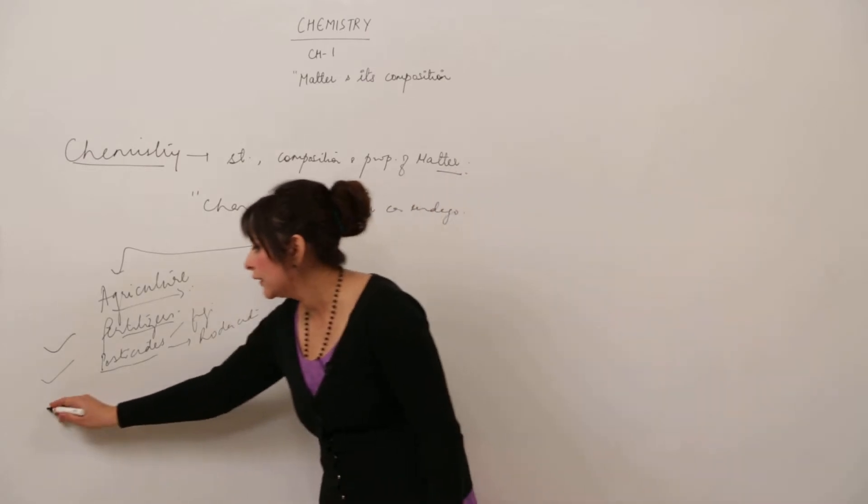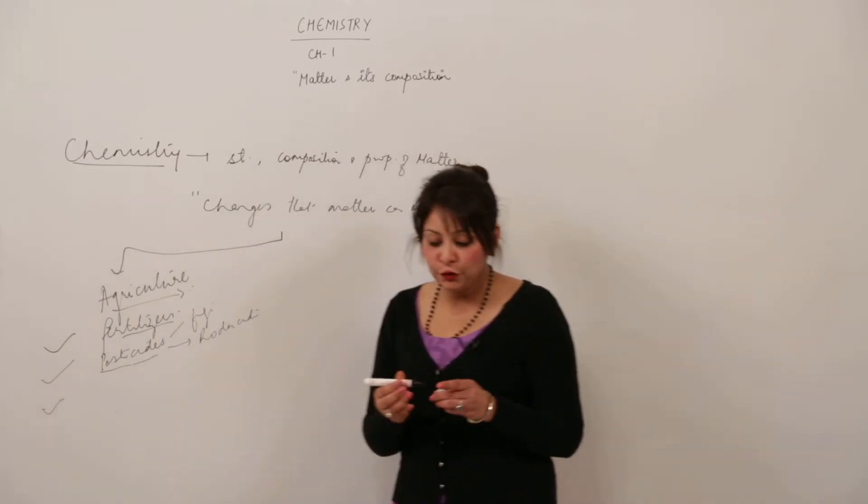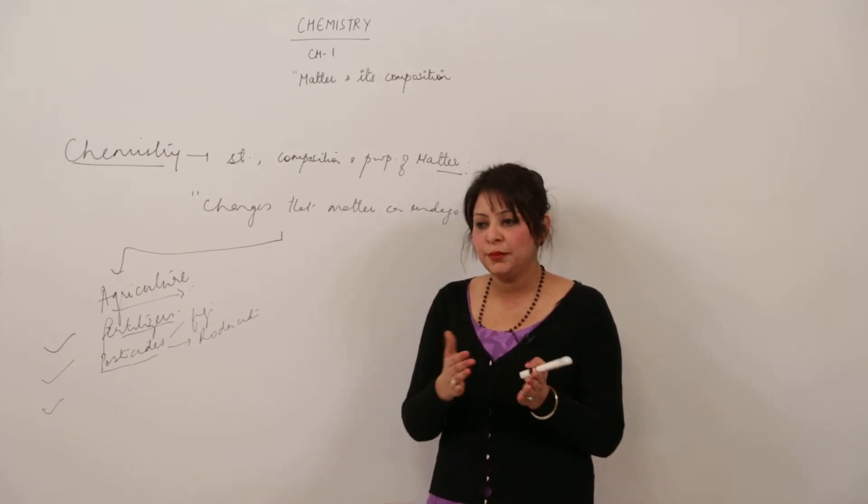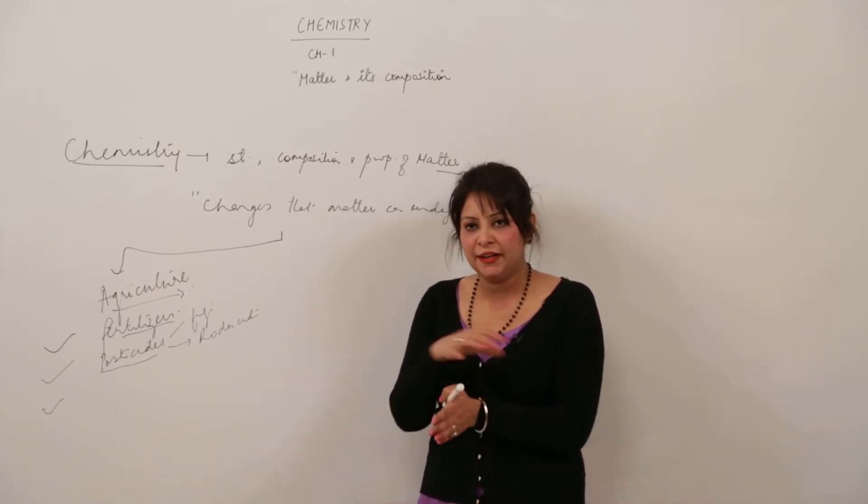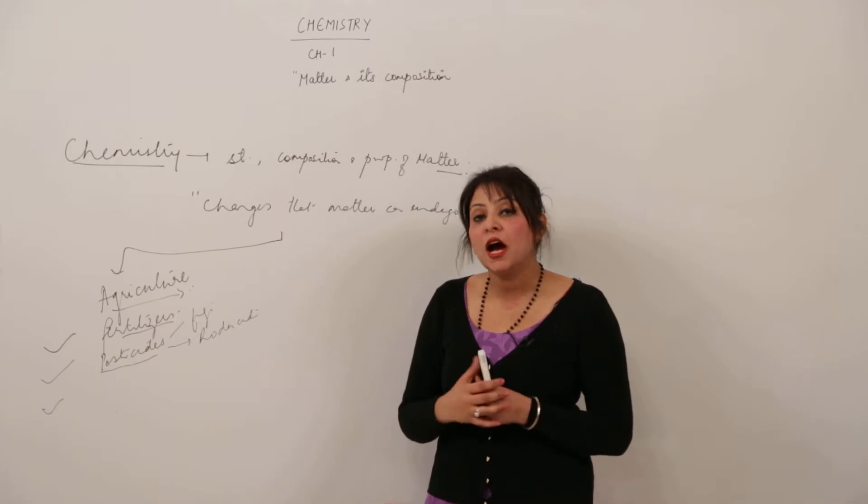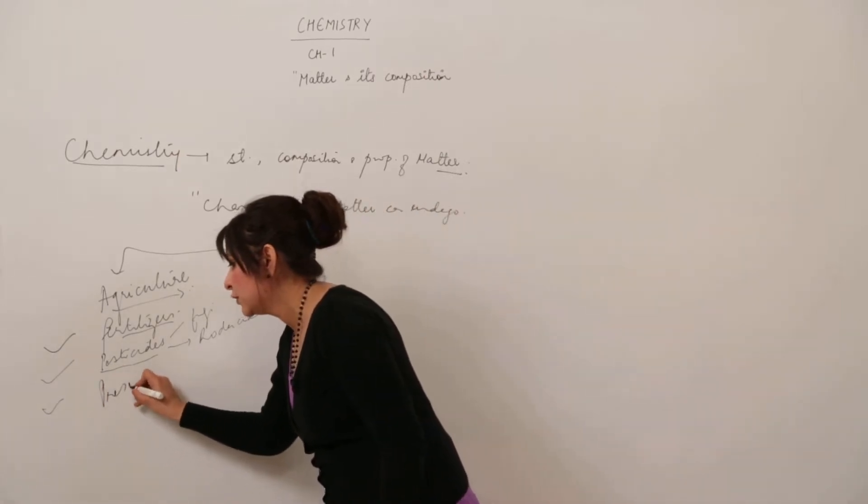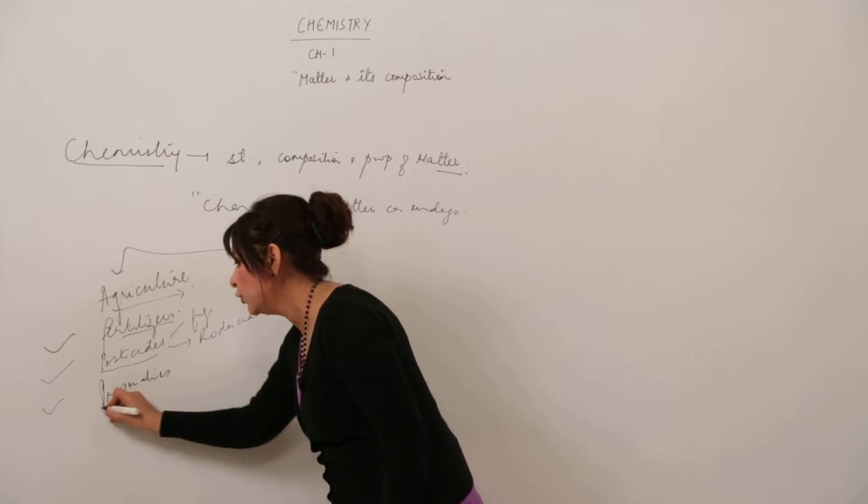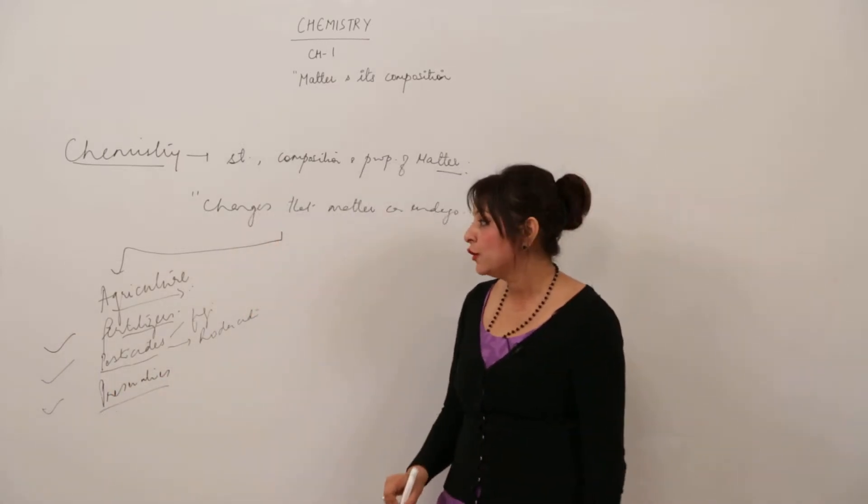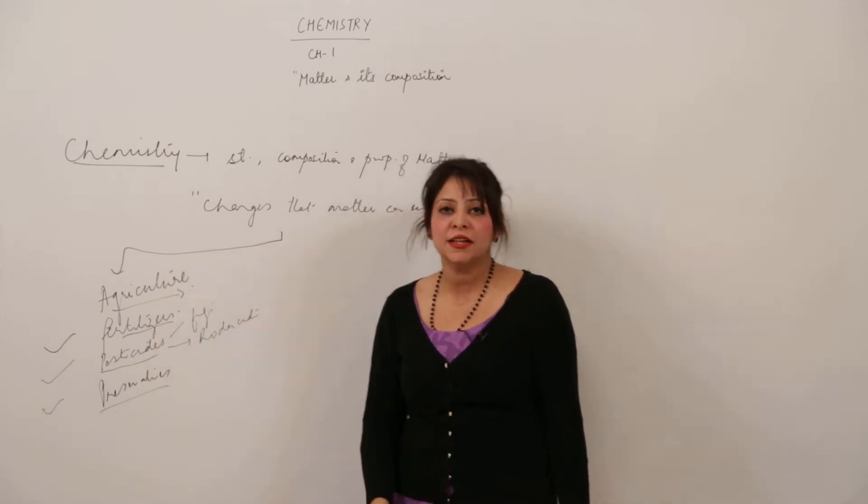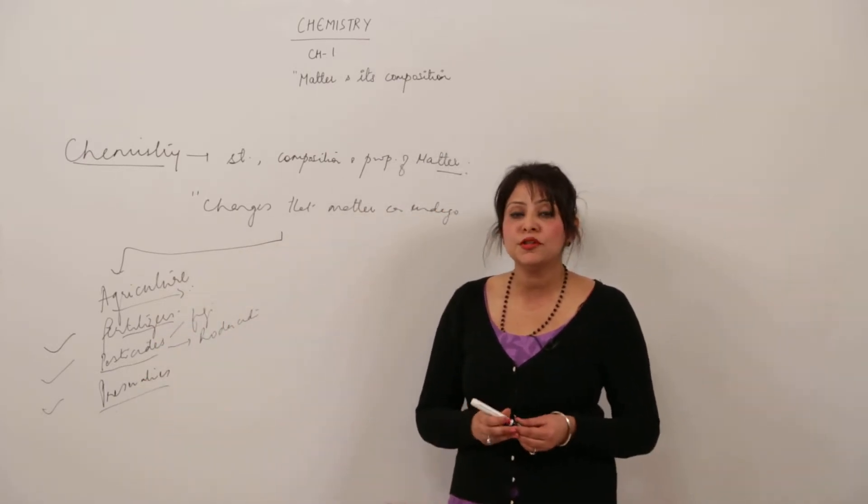Again these are chemicals. If you buy a jam from the market, you can use it within the period from manufacture to expiry date. How? Because it contains preservatives. Preservatives are also chemical compounds. So we see that there are a lot of things which we are using in agriculture that come from chemistry, so it plays an important role in the branch of agriculture as well.